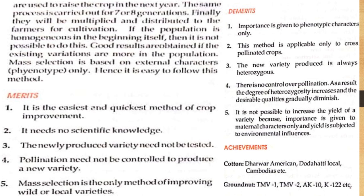Mass selection is the only method of improving wild and local varieties. Demerits: importance is given to phenotypic characters only; this method is applicable only to cross-pollinated crops; the new variety produced is always heterozygous; there is no control over pollination, so the degree of heterozygosity increases and desirable quality gradually diminishes; it is not possible to increase the yield because importance is given to non-maternal characters only and yield is subject to environmental influence. Achievements through mass selection: cotton — Darwar American; groundnut — TMV1 and TMV2.